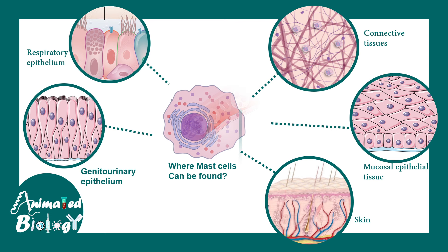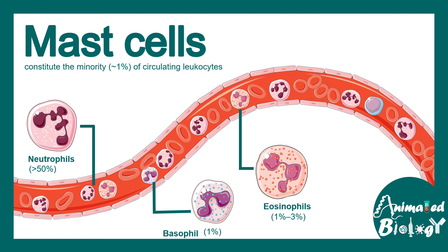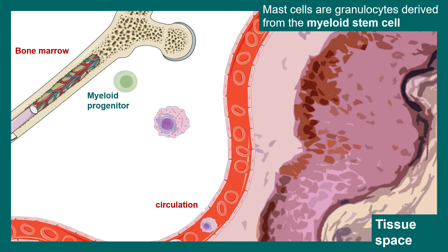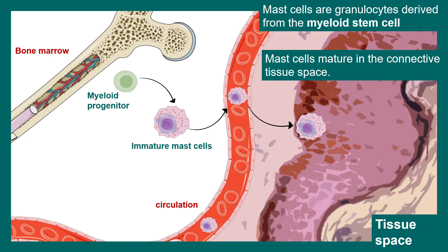Mast cells are not circulating in the bloodstream like neutrophils; in fact, they comprise only about 1% of the circulating leukocytes. Mast cells are born from the bone marrow, from the myeloid progenitor cell, but in the bloodstream they are initially in an immature state. Eventually, they move from the bloodstream to the tissue space where their differentiation takes place and they become mature mast cells.